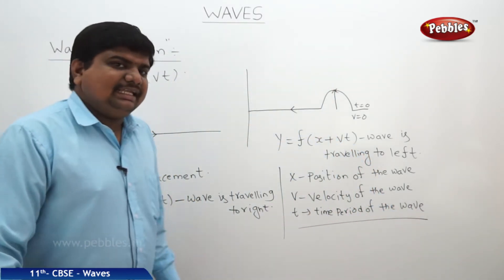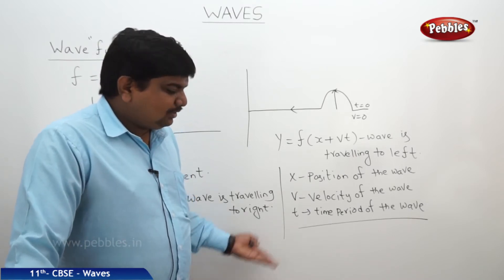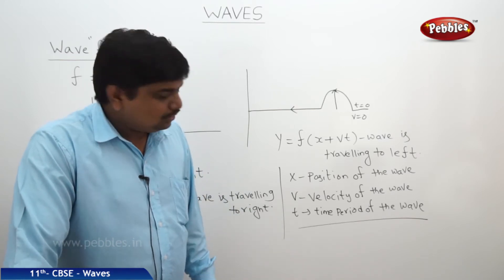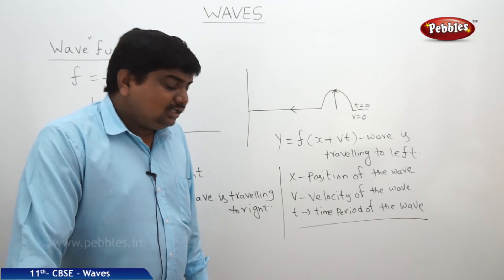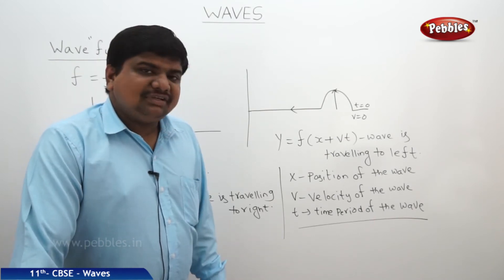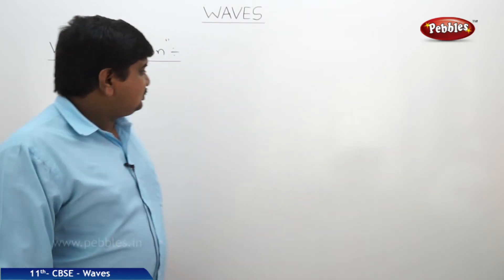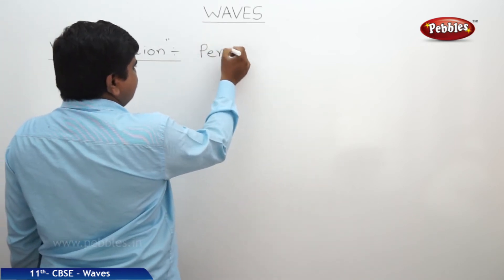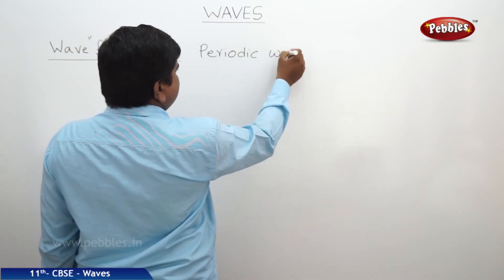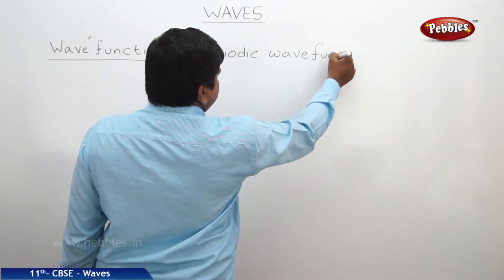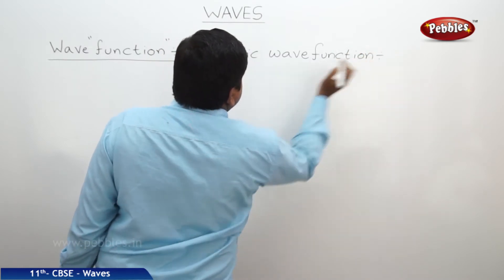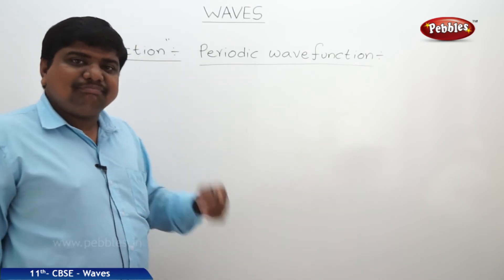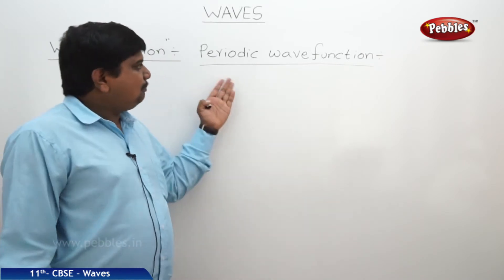Most waves are periodic in nature; otherwise, they would not propagate to longer distances with the same equal amplitude and fixed displacement. We will check how periodicity works to express the wave equation along the strings. The sub-classified form of the wave function is the periodic wave function. What is periodicity? Repeating the motion in the same path after a fixed time interval is called periodic motion.